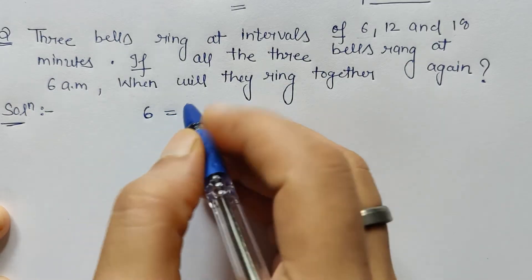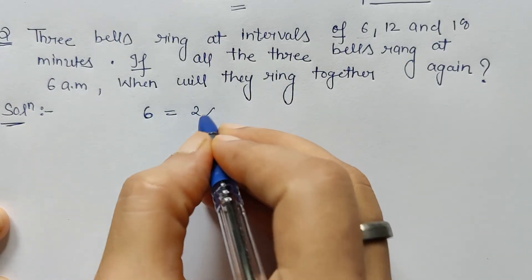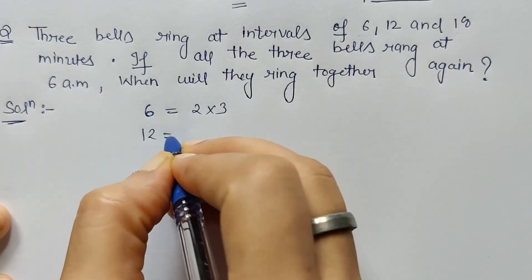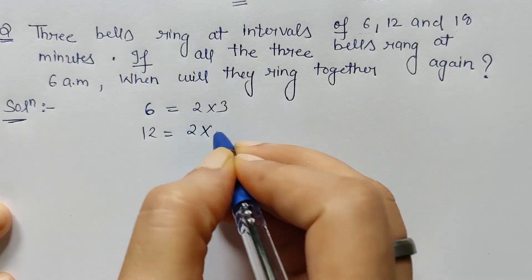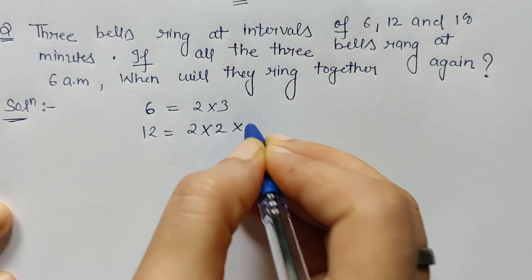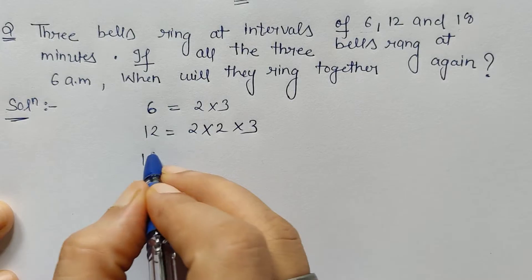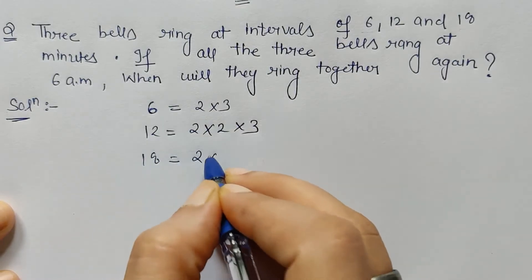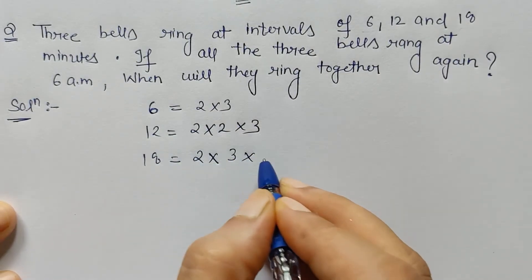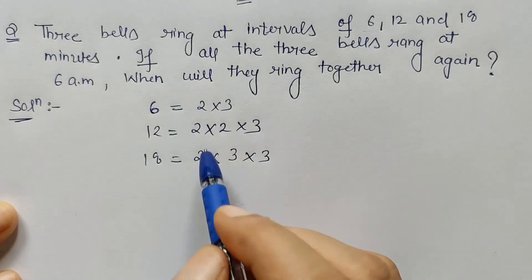Common prime factors: 6 is 2 and 3, and 12 can be written as 2, 2, and 3 (since 4 times 3 is 12), and 18 can be written as 2, 3, and 3. So here we have to find all common and not common factors.